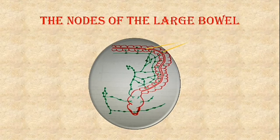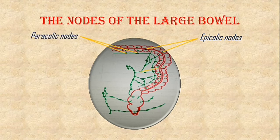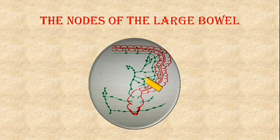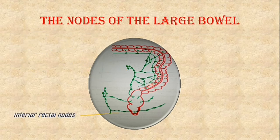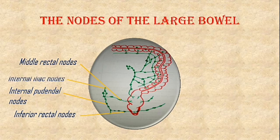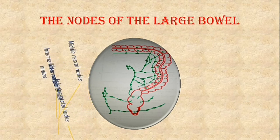Now let's conclude with the nodes of the large bowel. Here are the epicolic nodes along the taenia coli, and the paracolic nodes along the marginal artery. Here are the left colic nodes along the left colic artery. The sigmoid nodes along the sigmoid arteries, and the superior rectal nodes along the superior rectal artery. All of these drain into the inferior mesenteric nodes. The inferior rectal nodes drain into the internal pudendal nodes. Here are the middle rectal nodes. All of these drain into the internal iliac nodes, which in turn drain into the common iliac nodes.